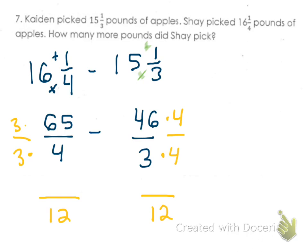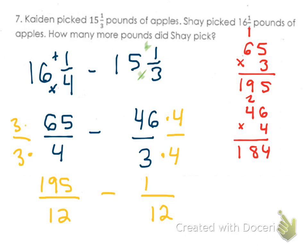So I don't make mistakes, I'm going to do some multiplication off to the side. I'm going to do 65 times 3. 3 times 5 is 15. Carry the 1. 6 times 3 is 18, so 19. I have 195 for that one. And then I need to do 46 times 4. 6 times 4 is 24. Carry the 2. 4 times 4 is 16. Plus 2 is 18. So I have 184 there. So I'm going to write those numbers in. I have 195 over 12 minus 184 over 12.